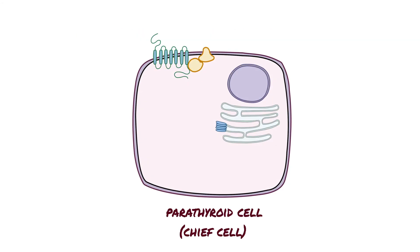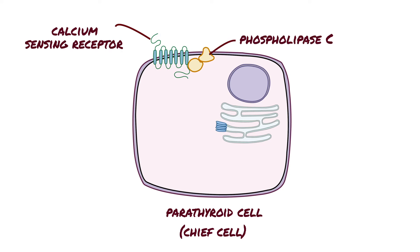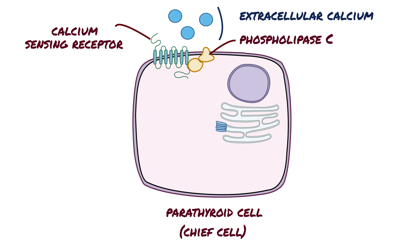The parathyroid cell membrane contains calcium-sensing receptors that are linked to phospholipase C. When the extracellular calcium concentration is increased, calcium binds to the receptor and activates phospholipase C. Phospholipase C then splits phosphatidylinositol bisphosphate, or PIP2, into two molecules: diacylglycerol, or DAG, and inositol triphosphate, or IP3.